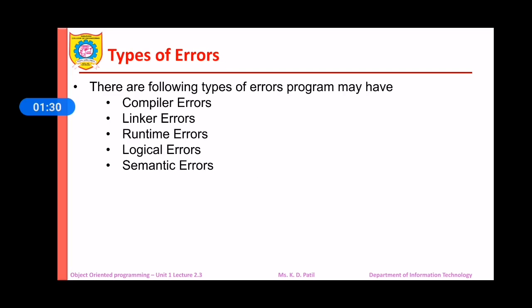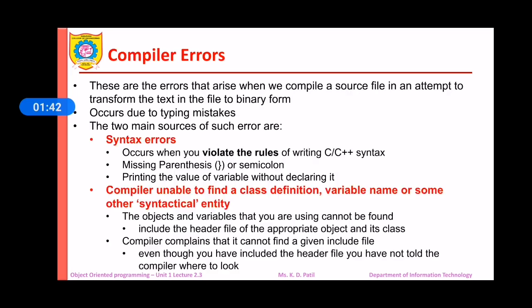Let us see the different types of errors our program may have: compiler errors, linker errors, runtime errors, logical errors, and semantic errors. Let us start with compiler errors.